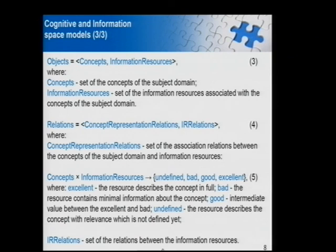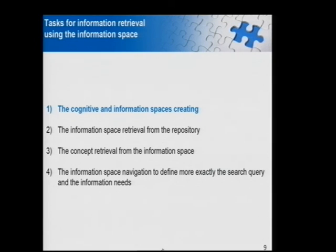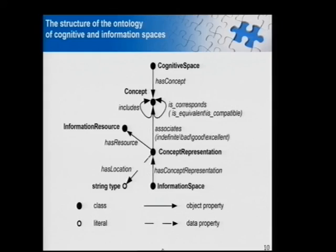The objects include concepts of the subject domain and information resources. The relations consist of concept representation relations, association relations between domain concepts, and relations between information resources allowing us to set the relevance level of resources to domain concepts. The key tasks for information retrieval using the information space include: cognitive information space creation, information space retrieval from the repository, concept retrieval from the information space, and information space navigation to refine the search query as information needs evolve.